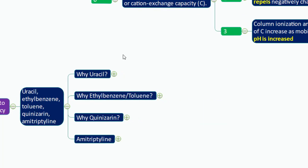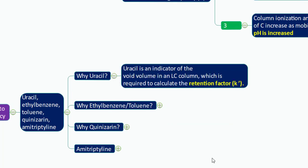Uracil is an indicator of the void volume in a liquid chromatography column, which is required to calculate the retention factor (k'). Uracil is an unretained compound, and you may have used it to calculate column void volume. Its purpose is to enable calculation of the retention factor.